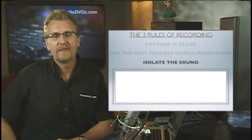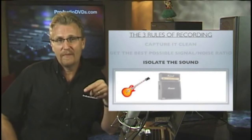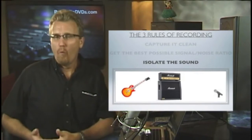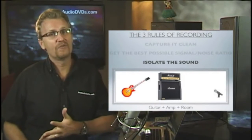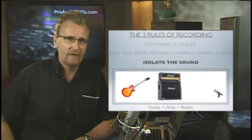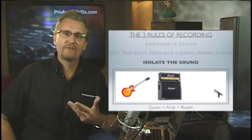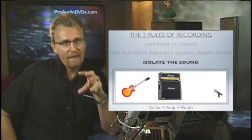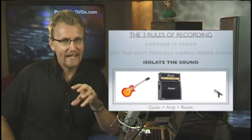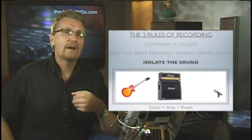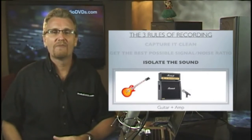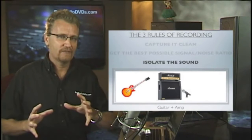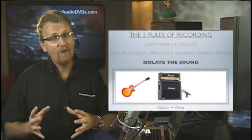Rule number three is isolate the sound. Let's follow an example of recording a guitar. Imagine we plug the guitar into an amp and mic that amp from a distance — what are we actually recording? The guitar, the amp, and the sound of the room. The sound of the room will depend on the environment: it might be a highly reflective room or a dull hall. Whenever you record like this you're recording all three elements. But if we move that mic closer, we've taken the room largely out of the equation — we're hearing mainly amp and no room.